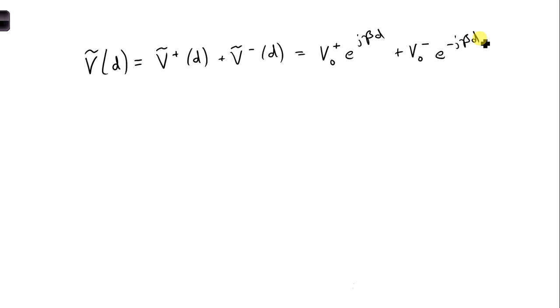So first, from part B, we determined that the voltage wave traveling towards the generator, that there is only a wave traveling towards the generator. So that means that this is equal to 0, so V0 plus is equal to 0.